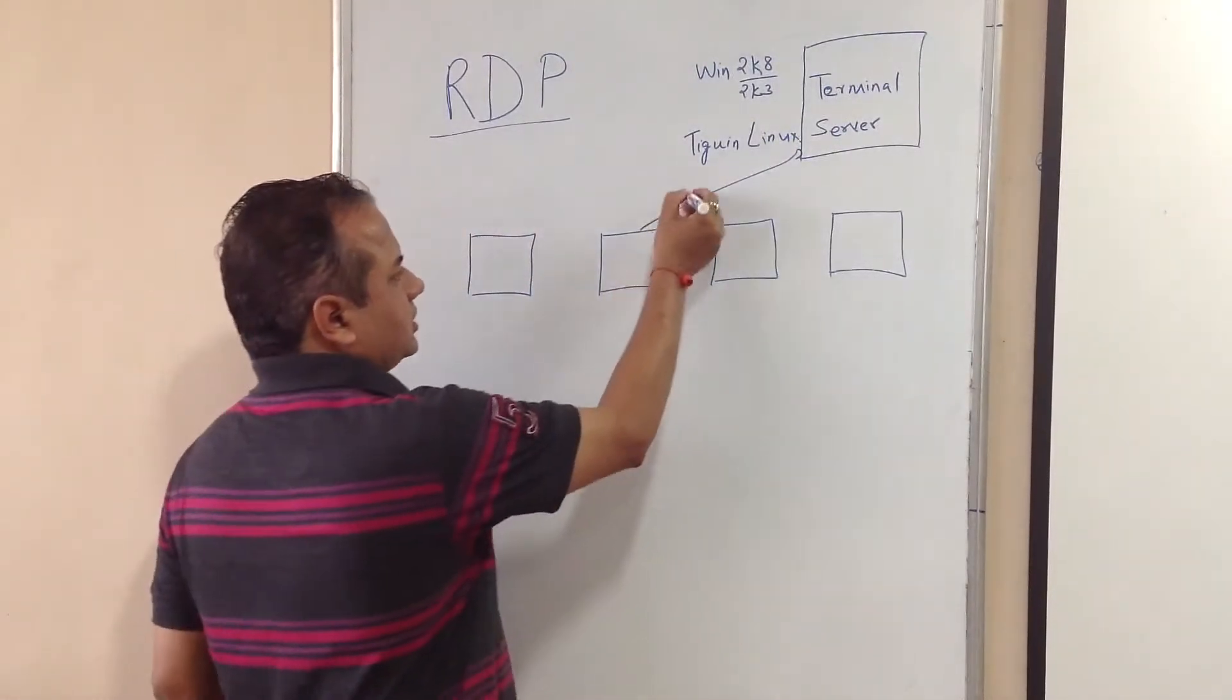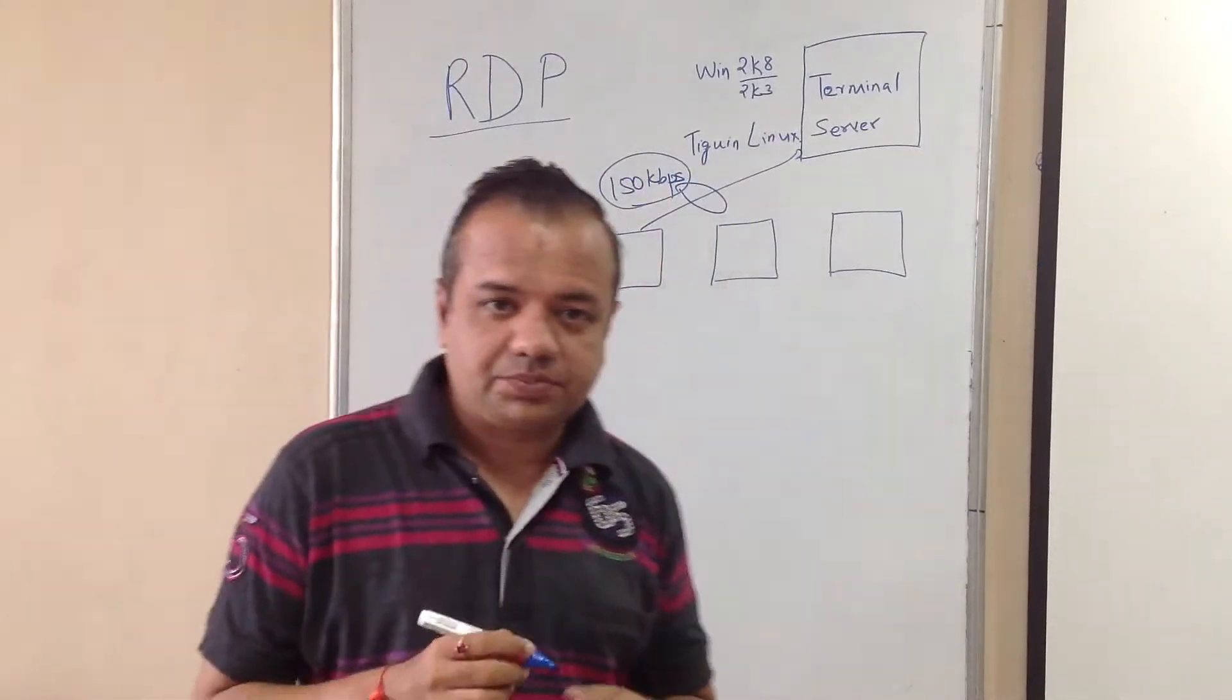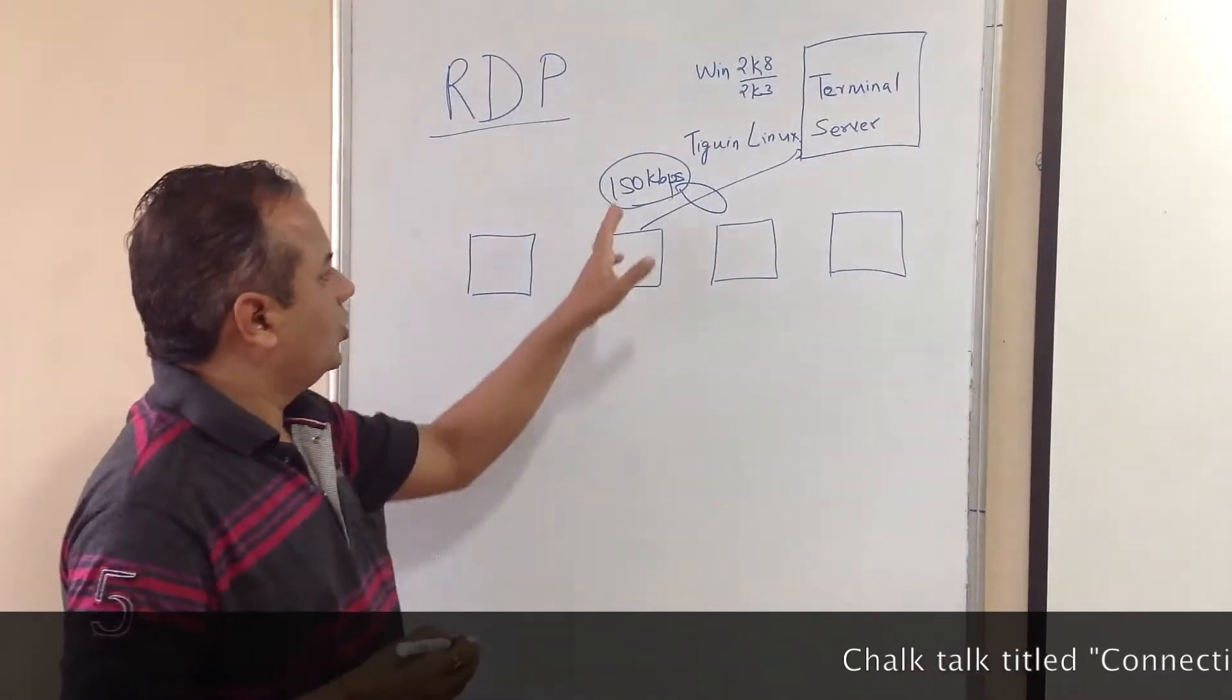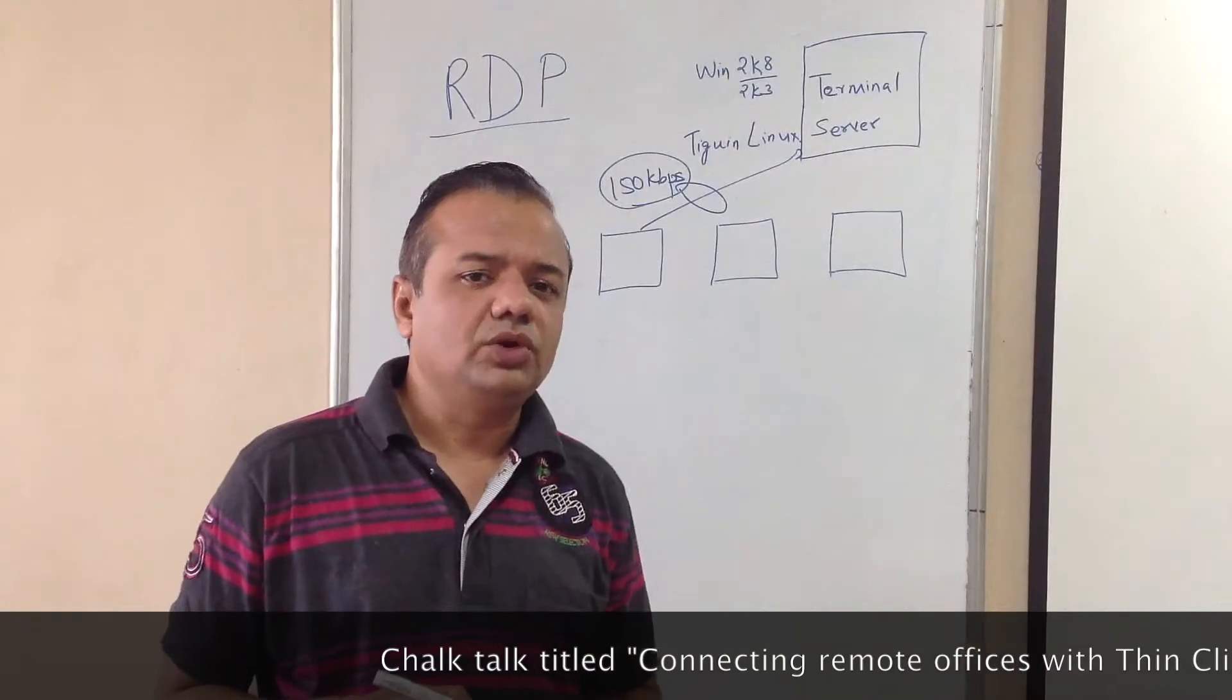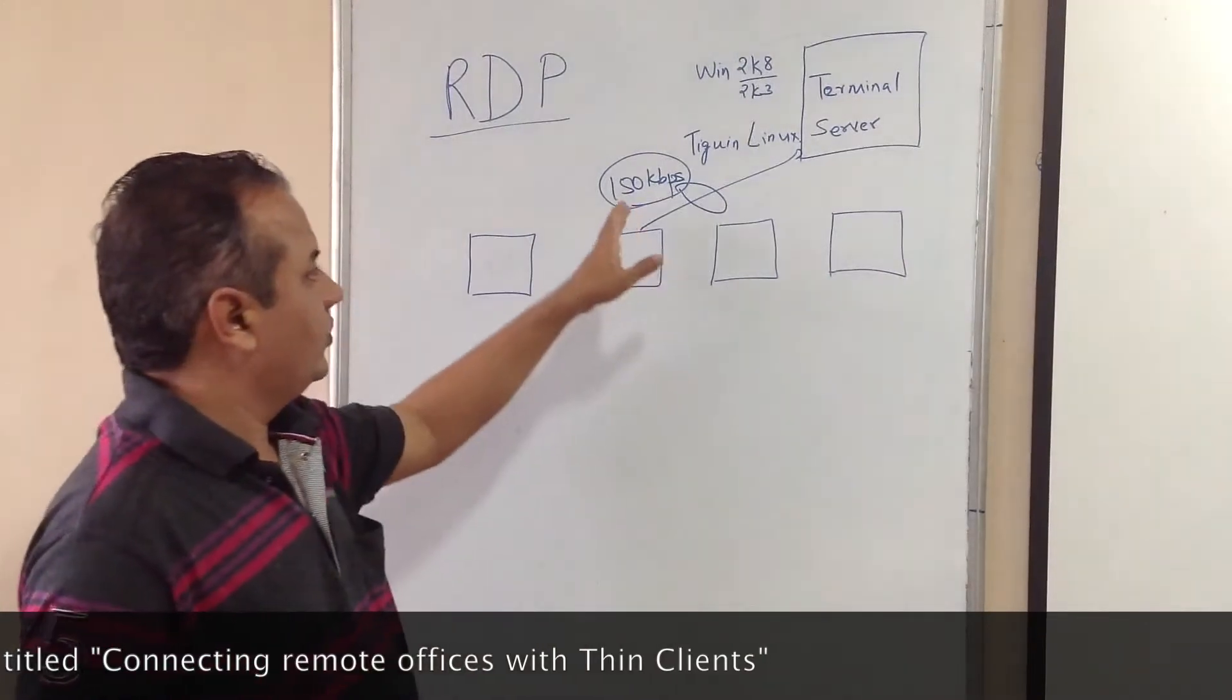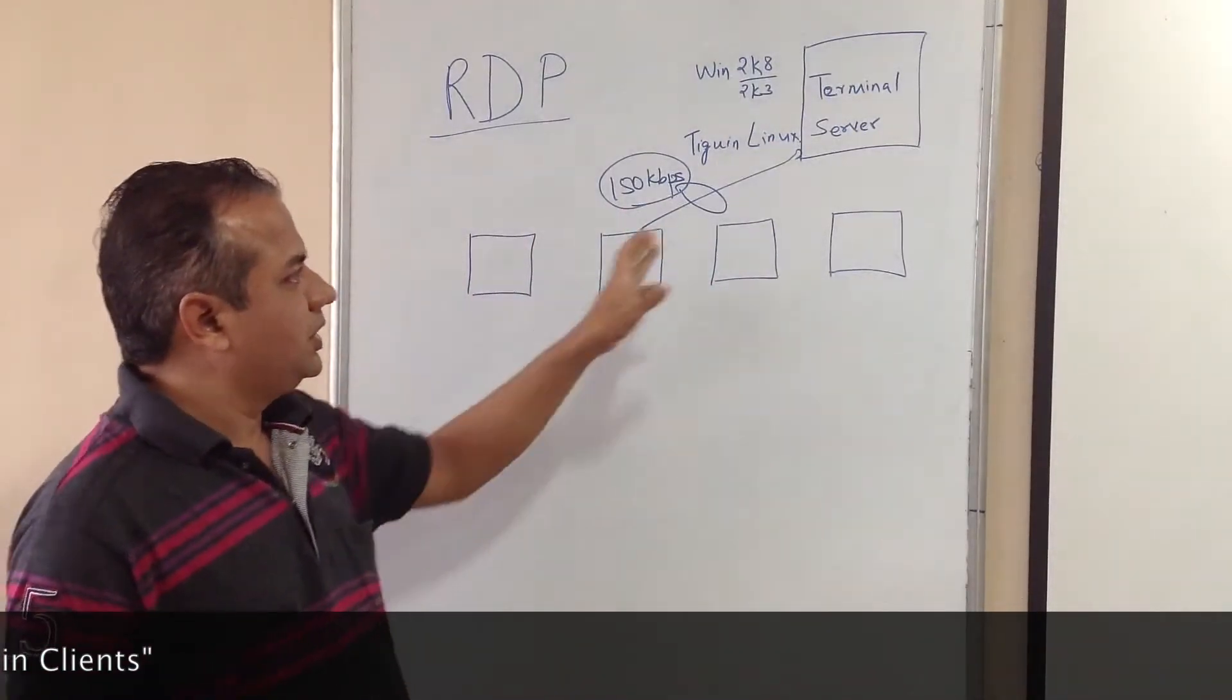The advantage is that this requires only 150 kbps of bandwidth. Now this is bandwidth, not speed - there is a difference. You can watch another video from our Chalk Talk on the difference between bandwidth and speed. So only 150 kbps is required for one thin client to work. That is an average. It can be much below that - typically office environments require around 30 to 40 kbps only. When you browse a rich HTML website, it will require 150 kbps. So the biggest advantage is you require only 150 kbps bandwidth.